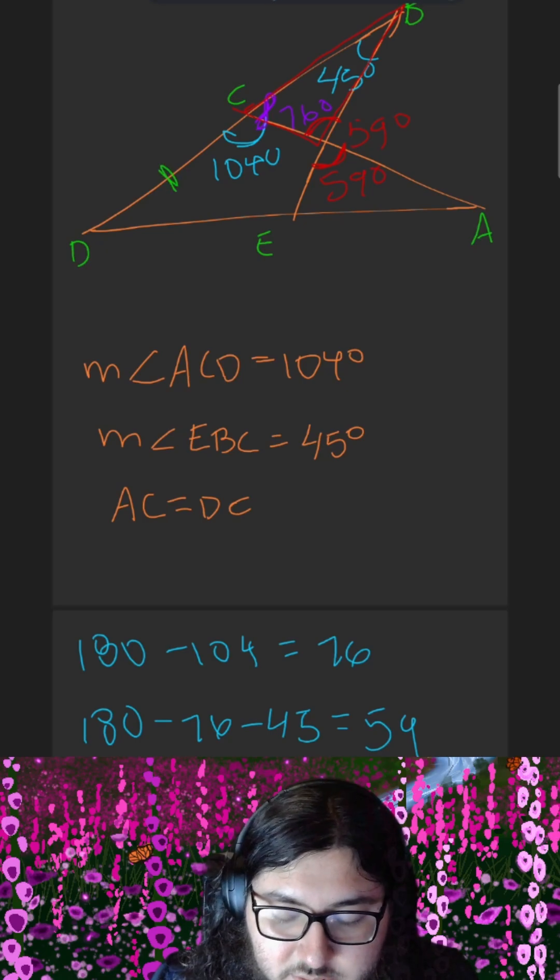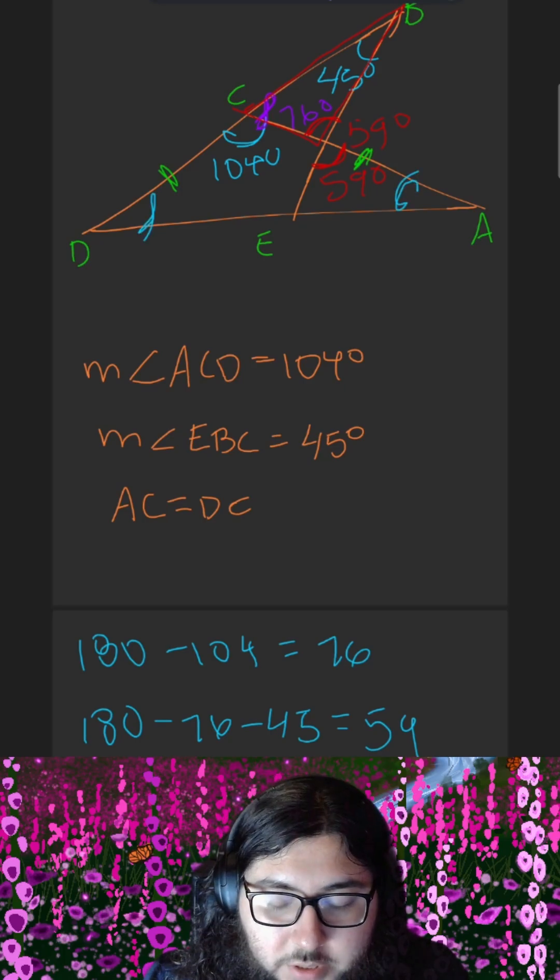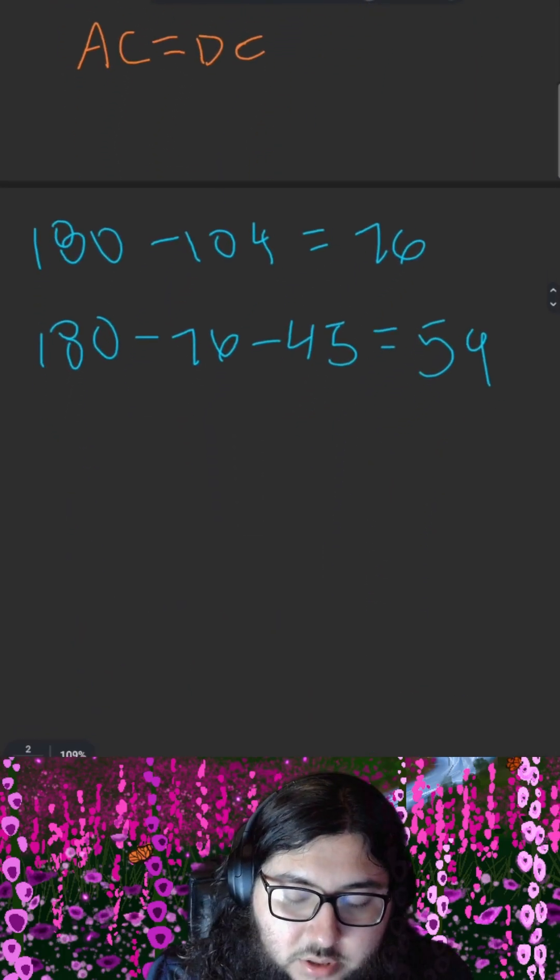Lastly, we use the fact that DC and AC are the same length. Therefore, this is an isosceles triangle, and the two angles we don't know are going to be equal to each other. So how can we calculate them?